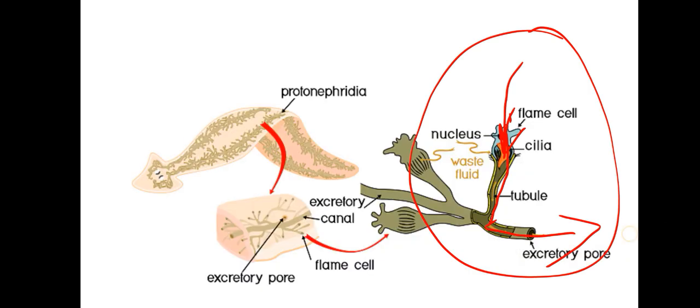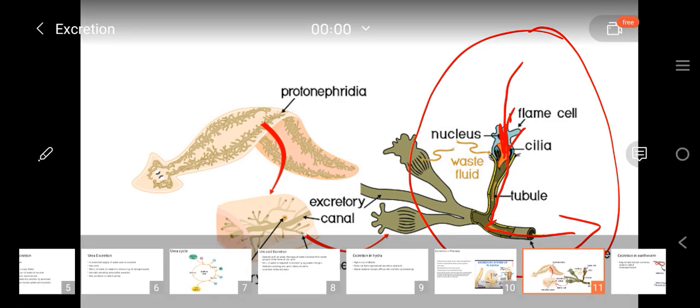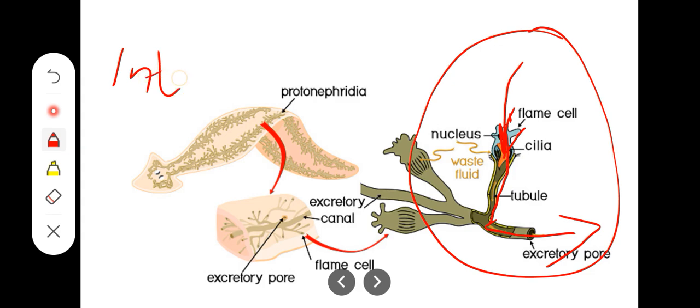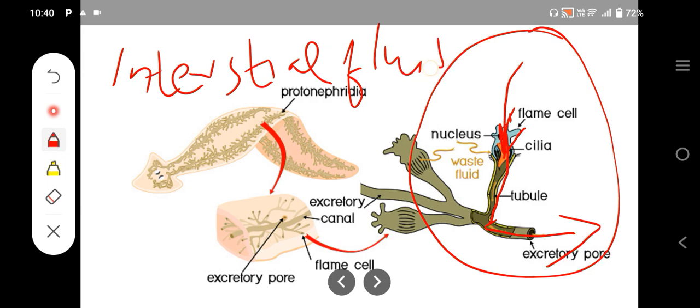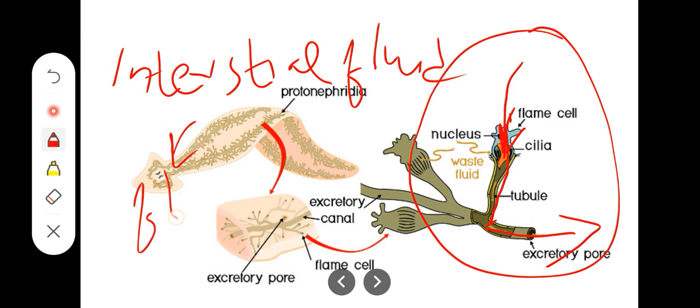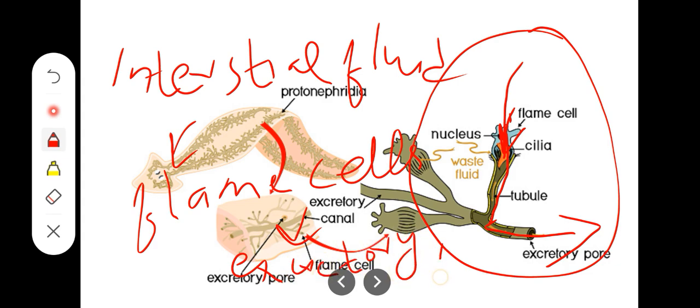Let's see the overall flow. First, the waste product is in the interstitial fluid, which enters the flame cells. Then, after the flame cells, it moves to the excretory pore through the excretory duct, where it will be excreted out into the environment. This is the overall excretion in Planaria.